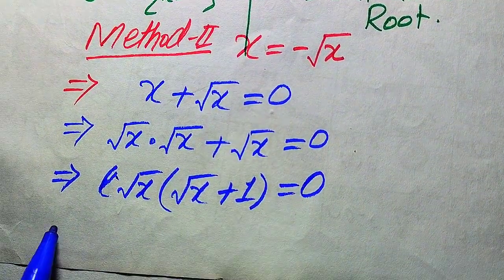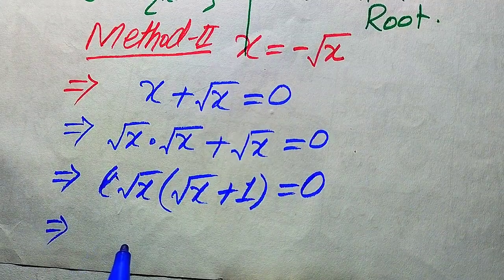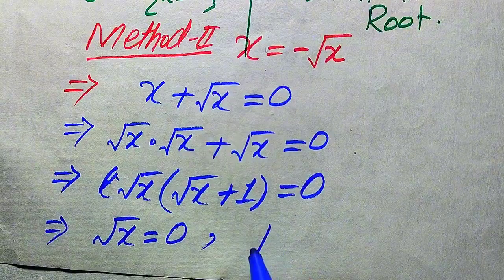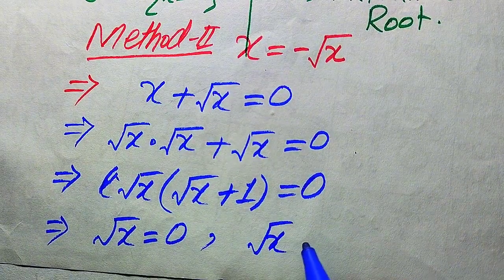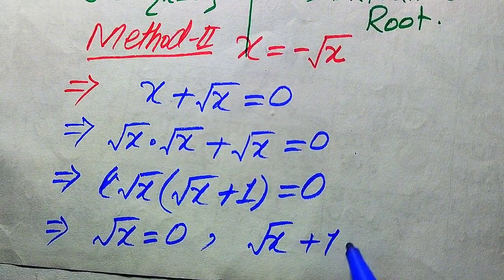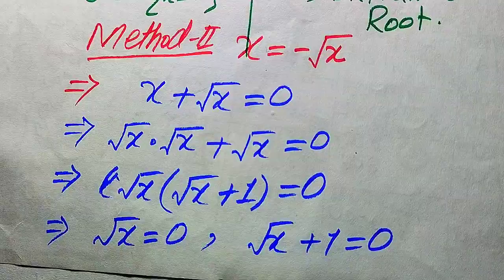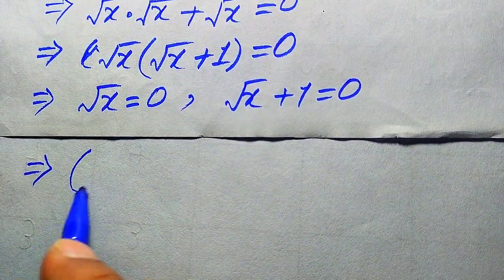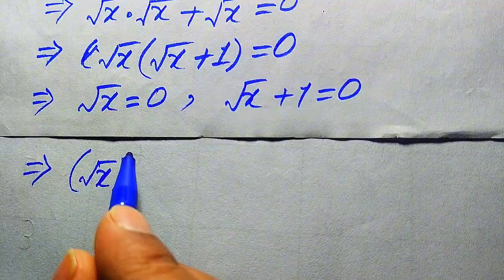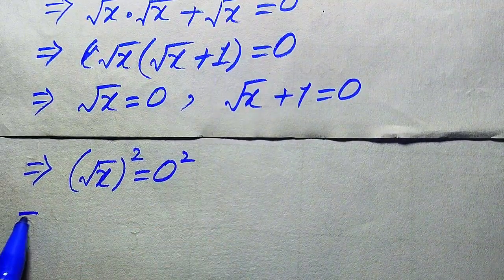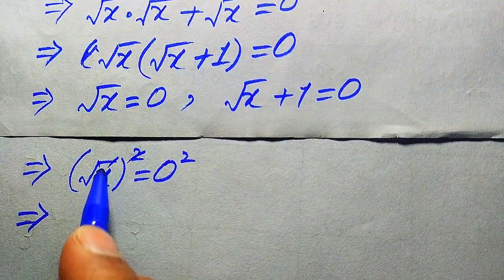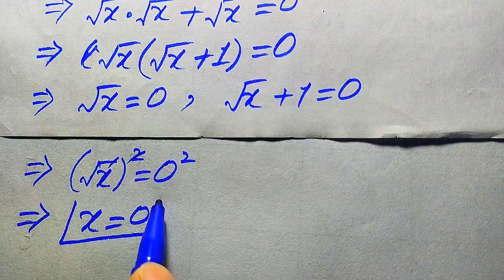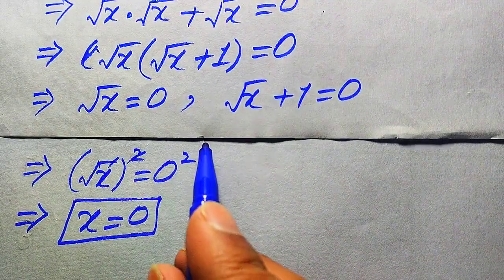We divide into two cases. The first case is square root of X equals zero, and the second case is square root of X plus 1 equals zero. For the first case, taking squaring on both sides: square root of X squared equals zero squared, and the square root cancels out, giving X equals zero. This is the first root.